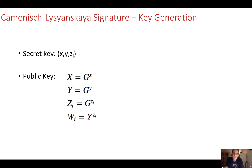In the CL signature method we have a secret key consisting of random values x and y, and for the number of messages we have a random z value — zi relates to the number of messages. We then create a public key: the generator point on our bilinear mapping gives x-hat as g to the power of x, y-hat as g to the power of y, zi-hat as g to the power of zi, and wi as y-hat to the power of zi. This becomes our public key.